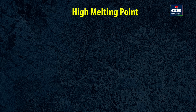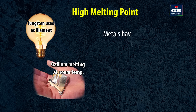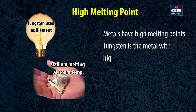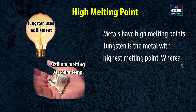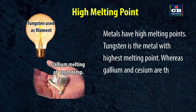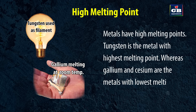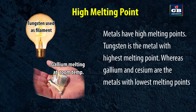High melting point: Metals have high melting points. Tungsten is the metal with the highest melting point, whereas gallium and cesium are the metals with the lowest melting points.